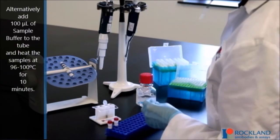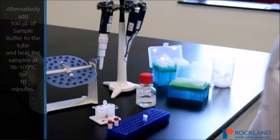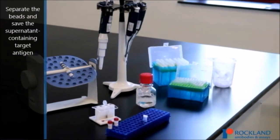Alternatively, add 100 microliters of sample buffer to the tube and heat the samples at 96 to 100 degrees Celsius for 10 minutes. Separate the beads and save the supernatant containing the target antigen.